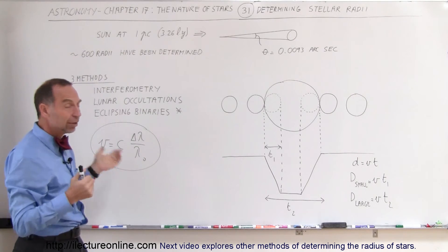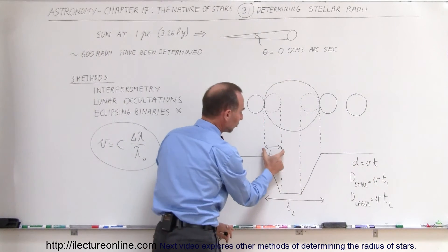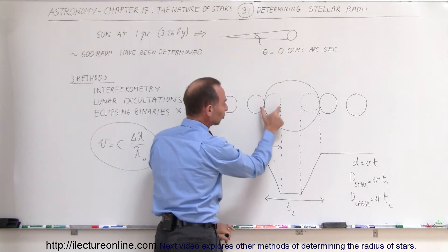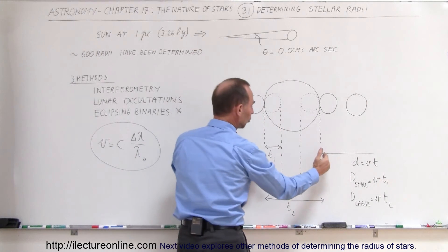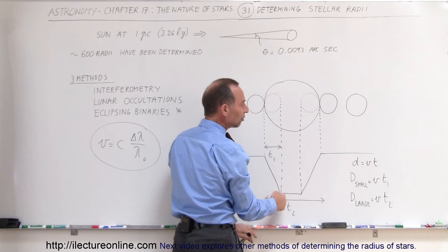From that, we then of course know that the distance covered is equal to the velocity times time, and we can measure the time that it takes for the small star to disappear behind the big star, this is called T1, and we can measure the total time it takes from this point to that point, which is T2.